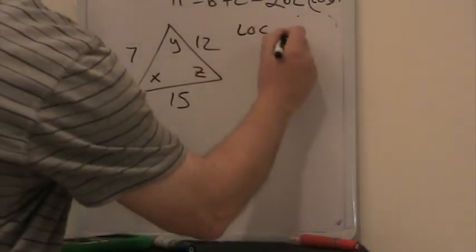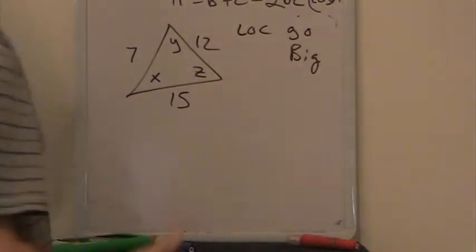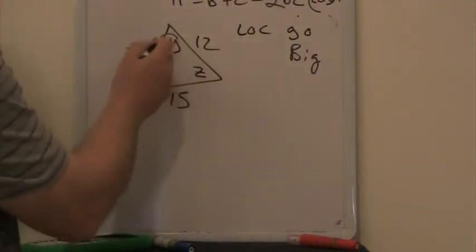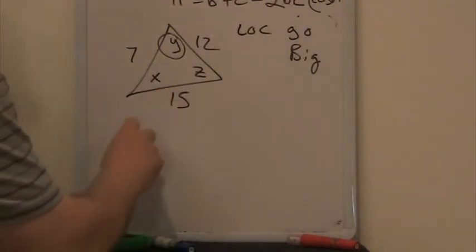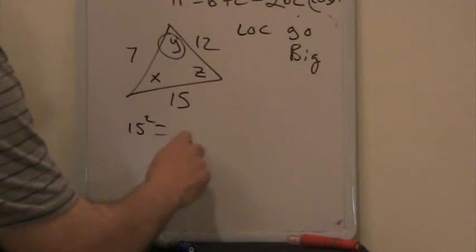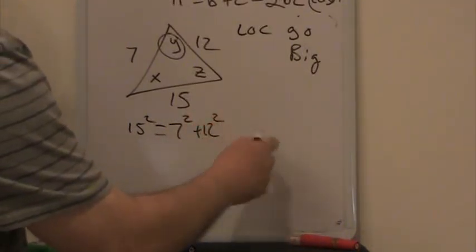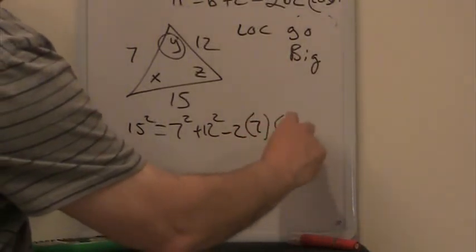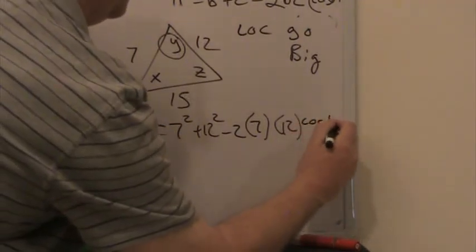Now, using Law of Cosines to find an angle, we go for the big guy. With Law of Cosines, I always like to put down 'go big.' Well, since this is 15 over here, y would be my biggest angle. So I'm going to start this with the 15 here. 15² would equal 7² plus 12² minus 2(7)(12). I've got to squeeze this in here, times the cosine of y.